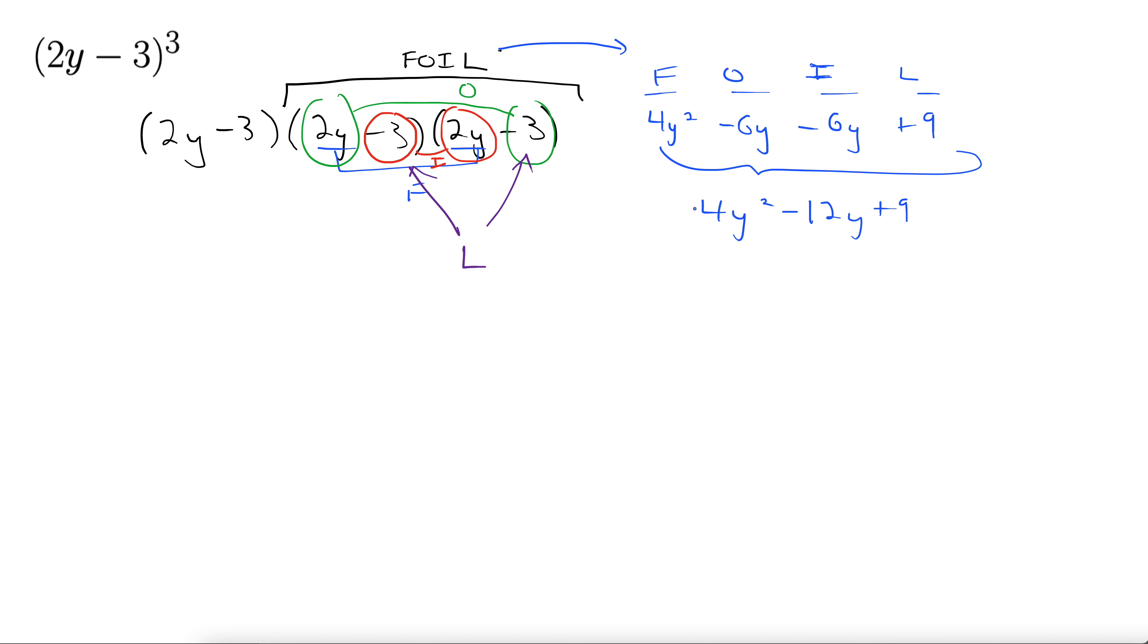So all of that was just to get these two foiled together. So we still have this 2y minus 3 out front. So now we can rewrite this as 2y minus 3 times this quantity here, 4y squared minus 12y plus 9.